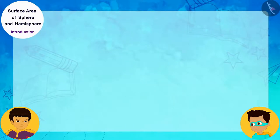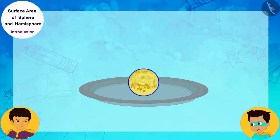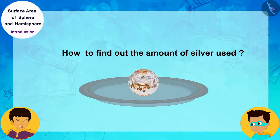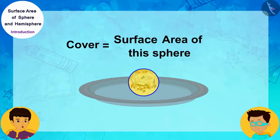Alright, I understood about the sphere, but how will we find out the amount of silver used to cover this spherical sweet? So, we can say that the silver used to cover the spherical sweet will be equal to the surface area of this sphere.